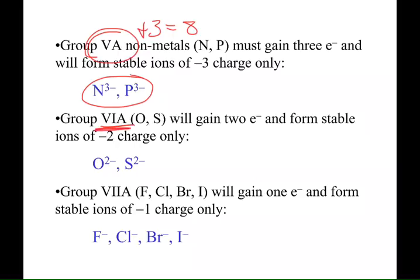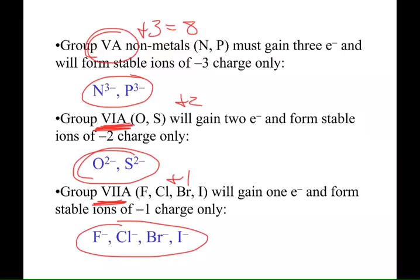6A has 6 valence electrons, so 6 plus 2 gives you 8. So that's why oxygen and sulfur, 6A non-metals, will pick up 2 electrons to become minus 2 anions. And then the halogens are 7A, so 7 plus 1 is equal to 8. So as they pick up 1 electron, they become a minus 1 charge.